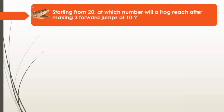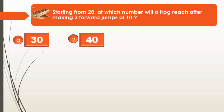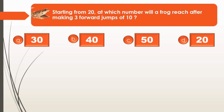Let's move to another question. Starting from 20, at which number will a frog reach after making 3 forward jumps of 10? Here we have 4 options. Option A: 30. Option B: 40. Option C: 50. And Option D: 20.